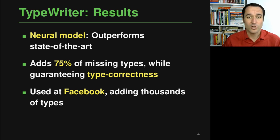If you use this approach, you can add 75% of the missing types while still guaranteeing that all the types you're adding are type correct, so the approach will not bother developers with type incorrect suggestions. And finally, this tool is used at Facebook where it has been used to add thousands of otherwise missing types.